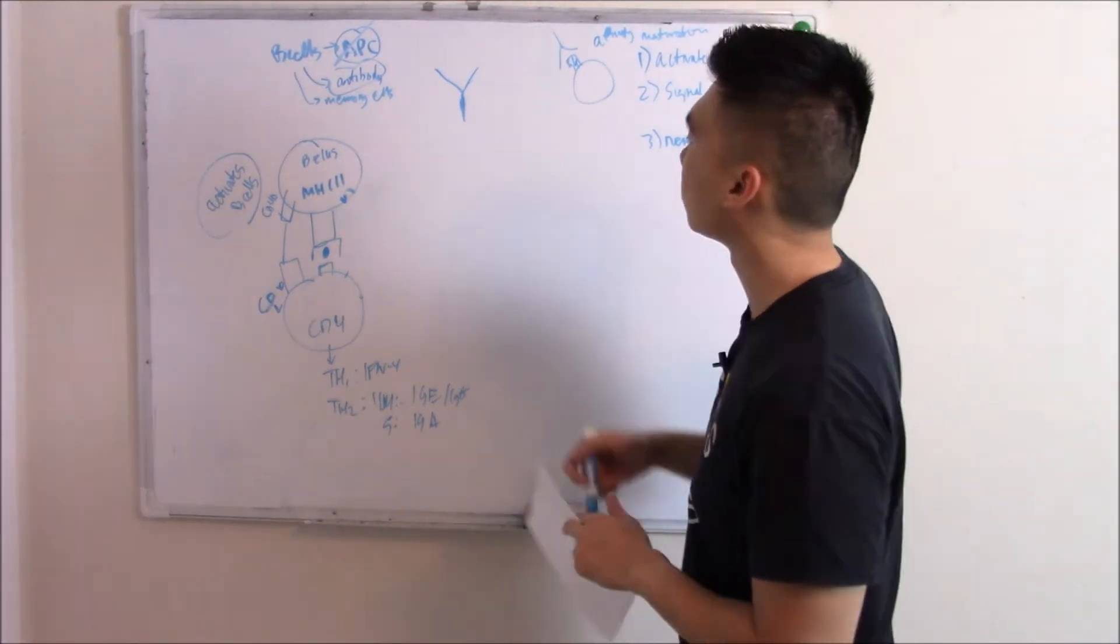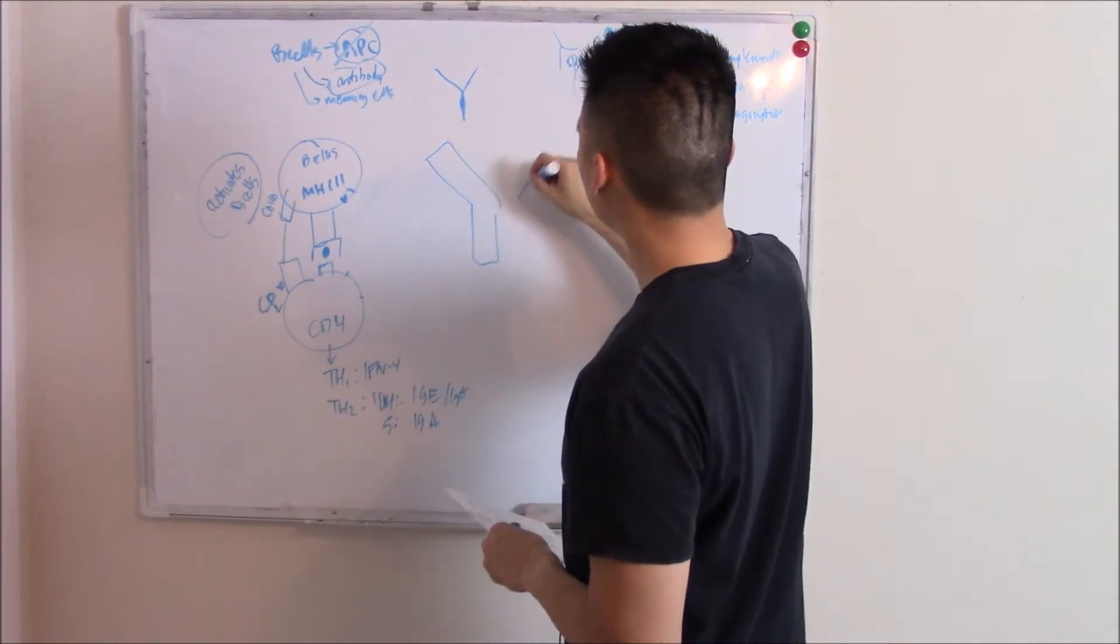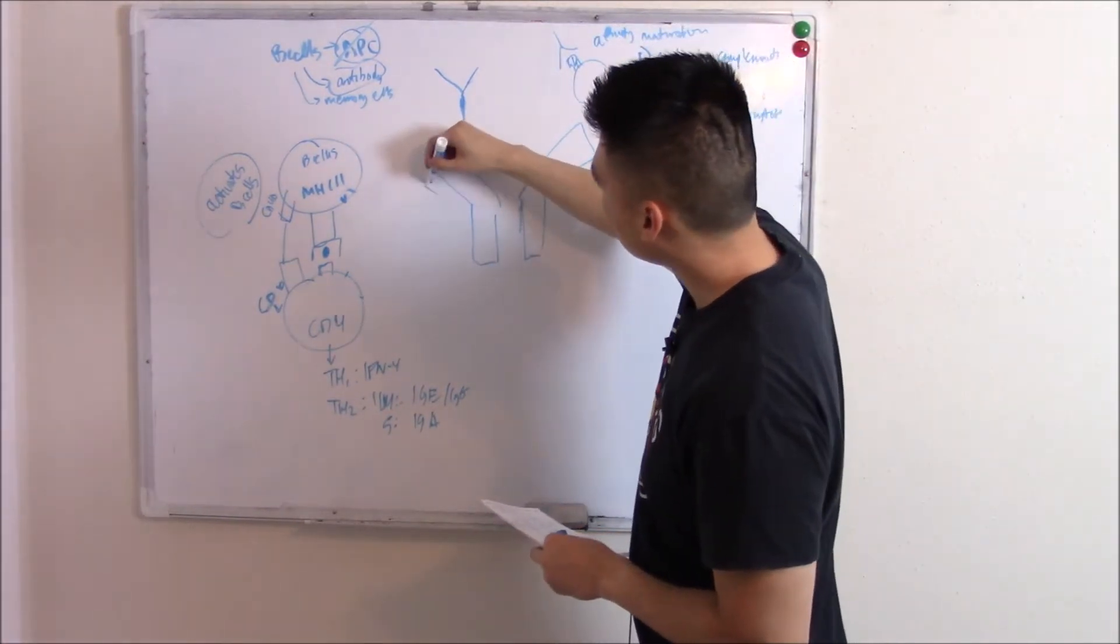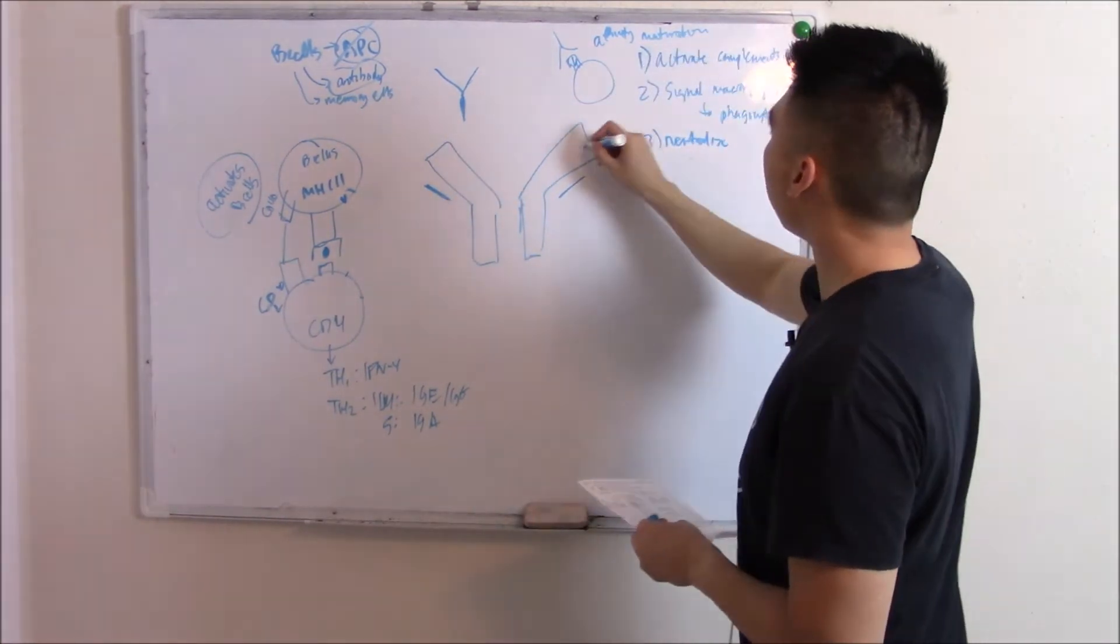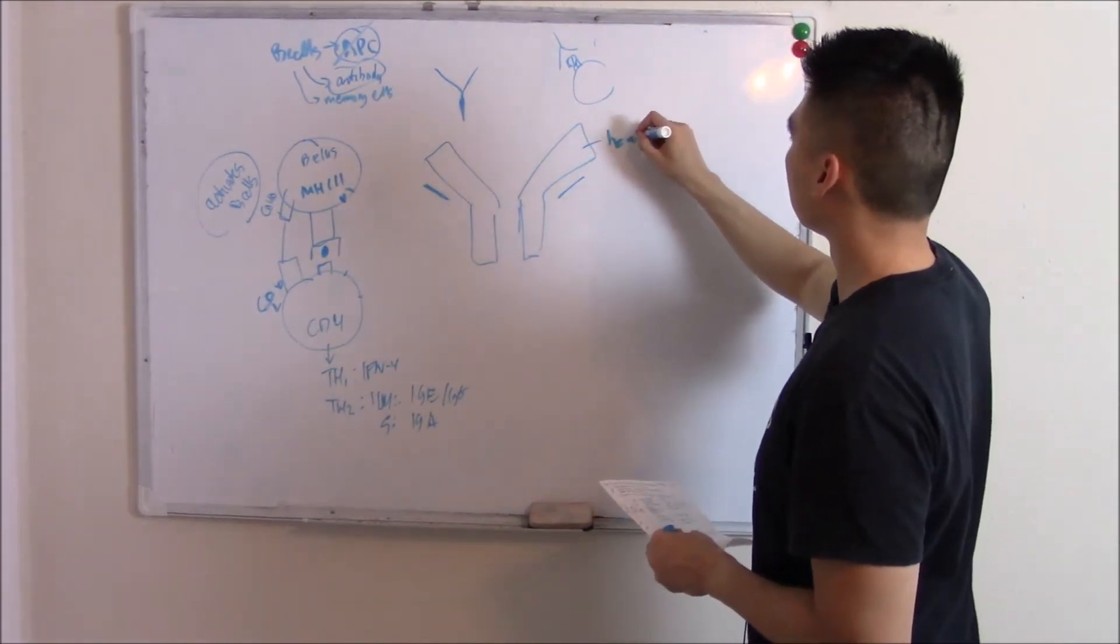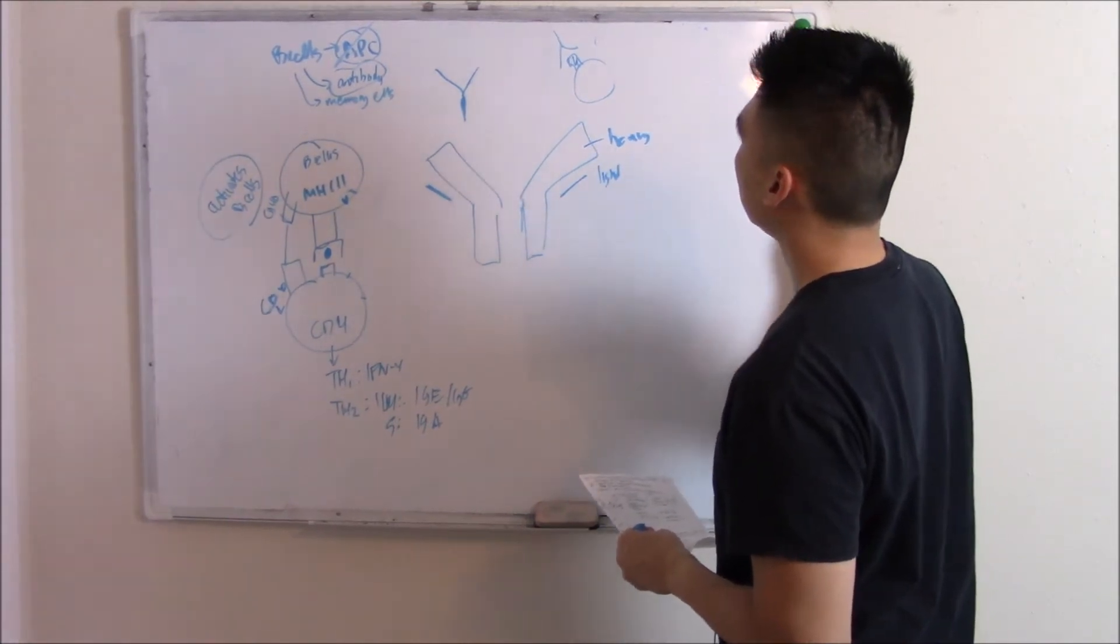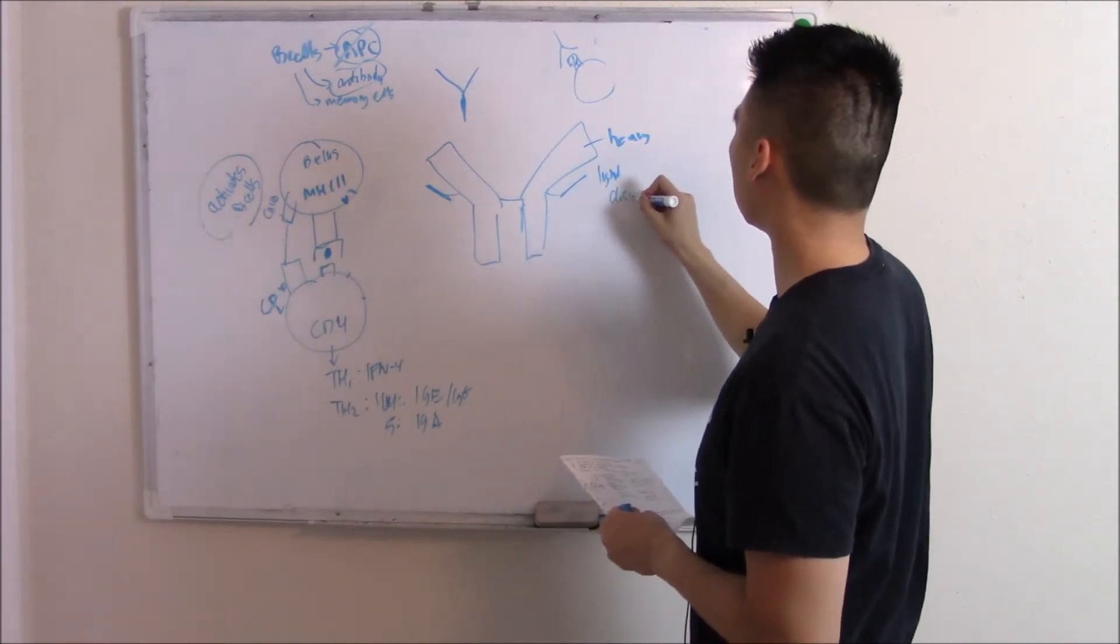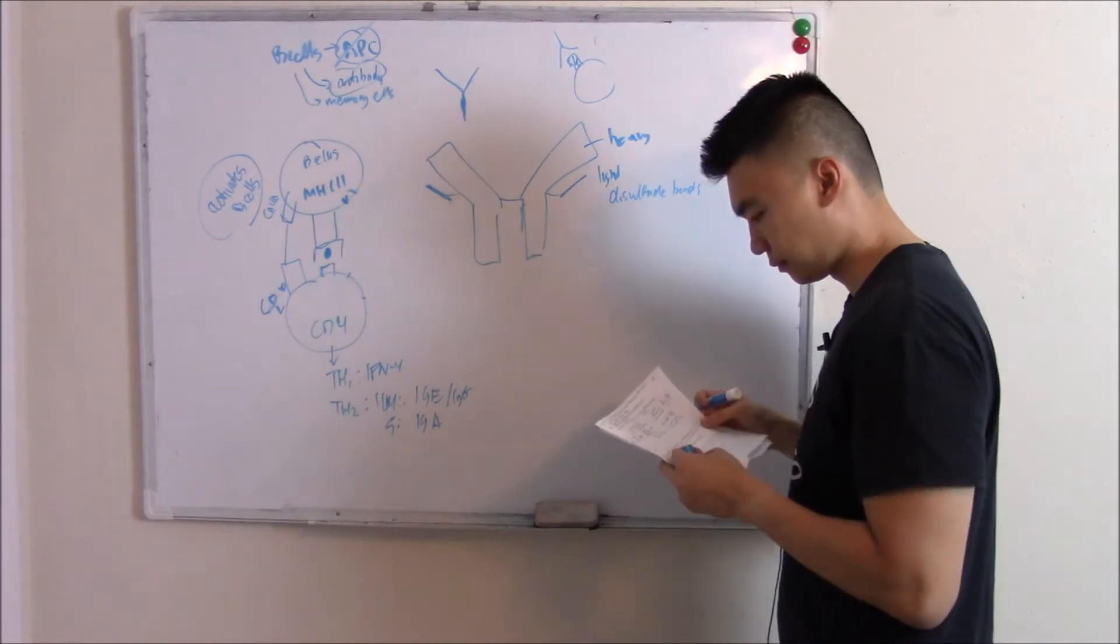Now let's look at the structure in a little bit more detail. You have this heavy chain, this really large heavy chain, and you have this smaller light chain. And they're bound, everything's bound together with disulfide bonds.